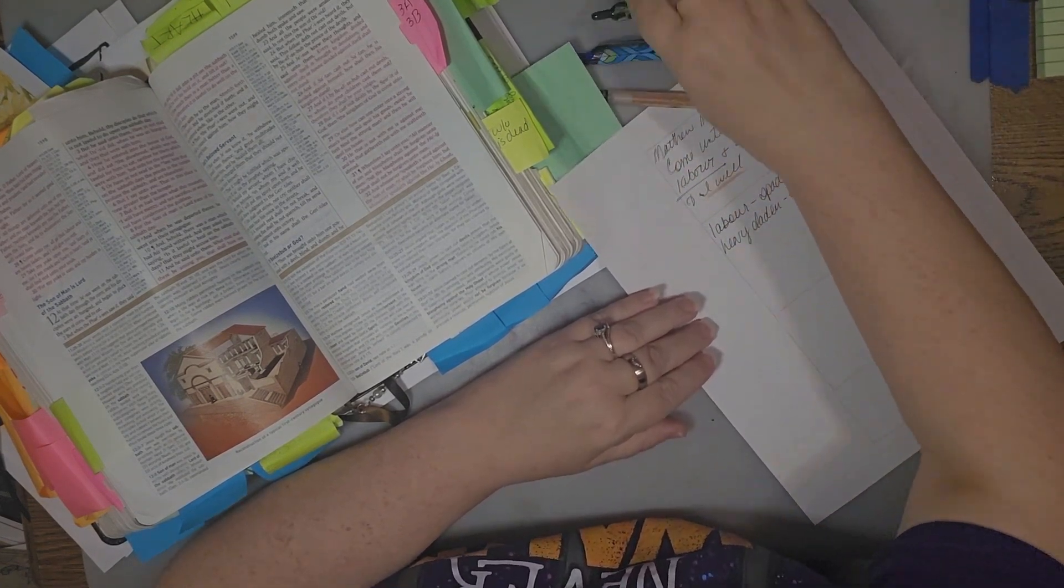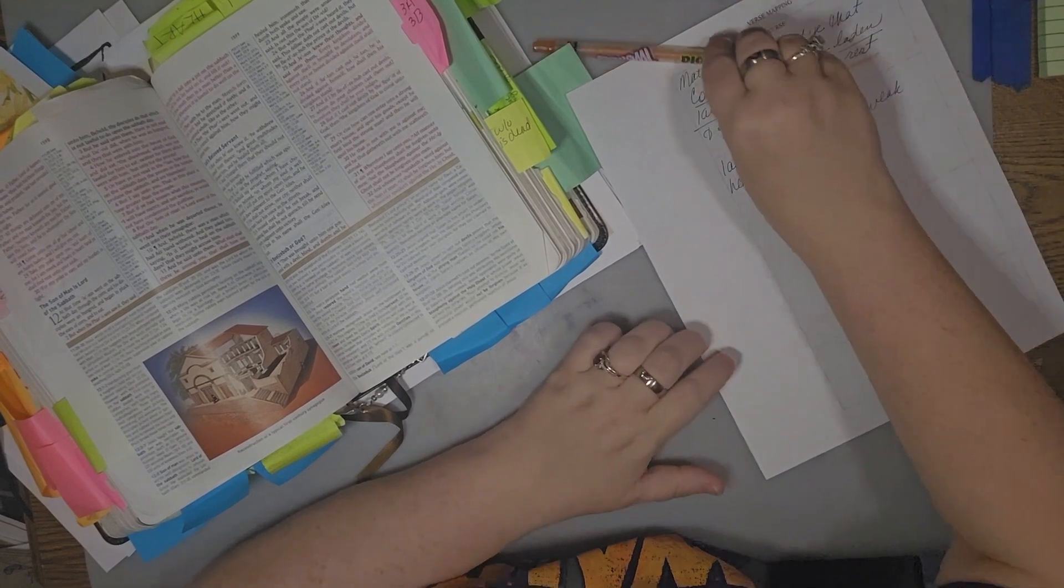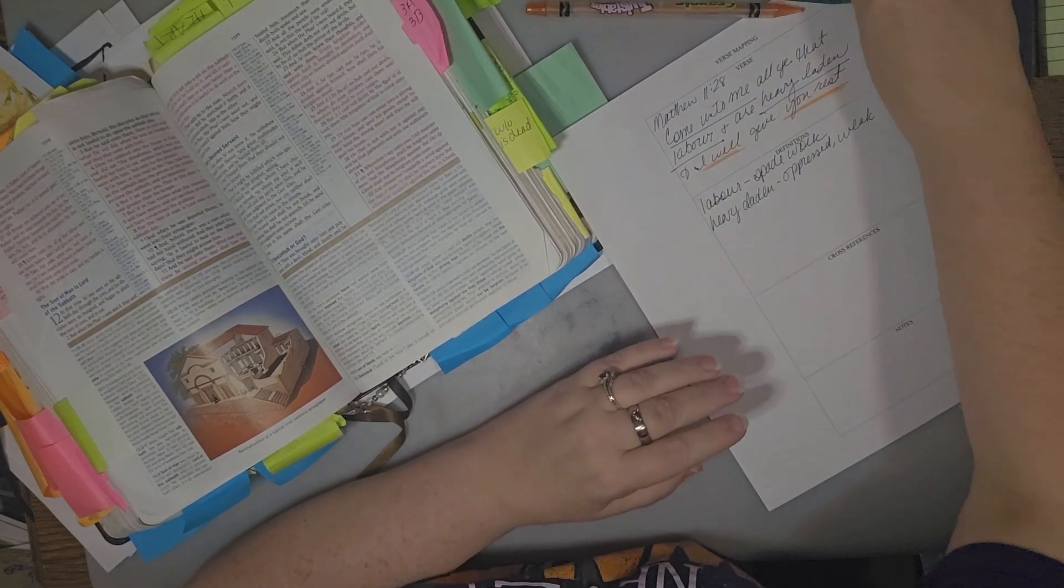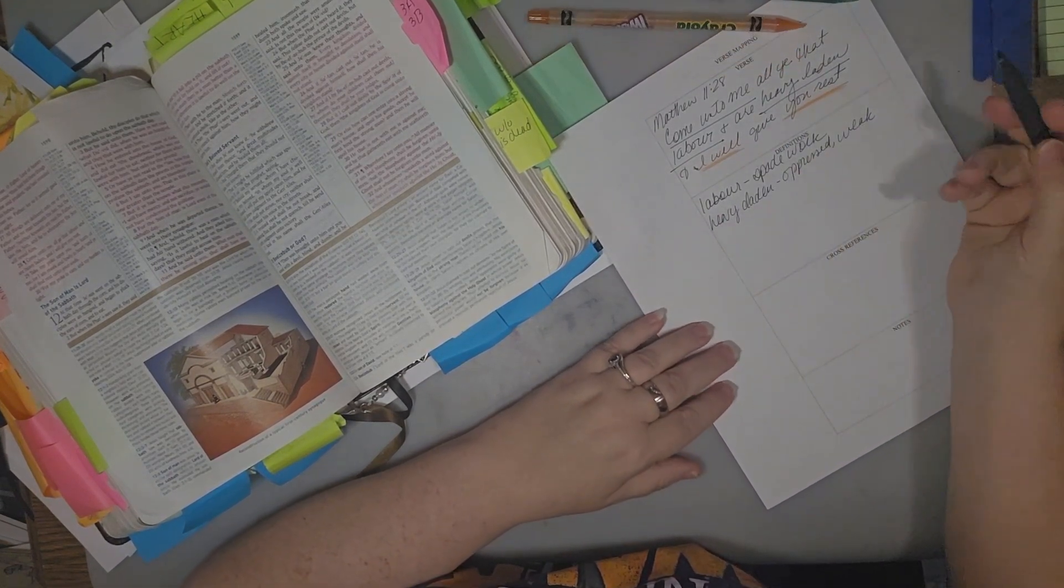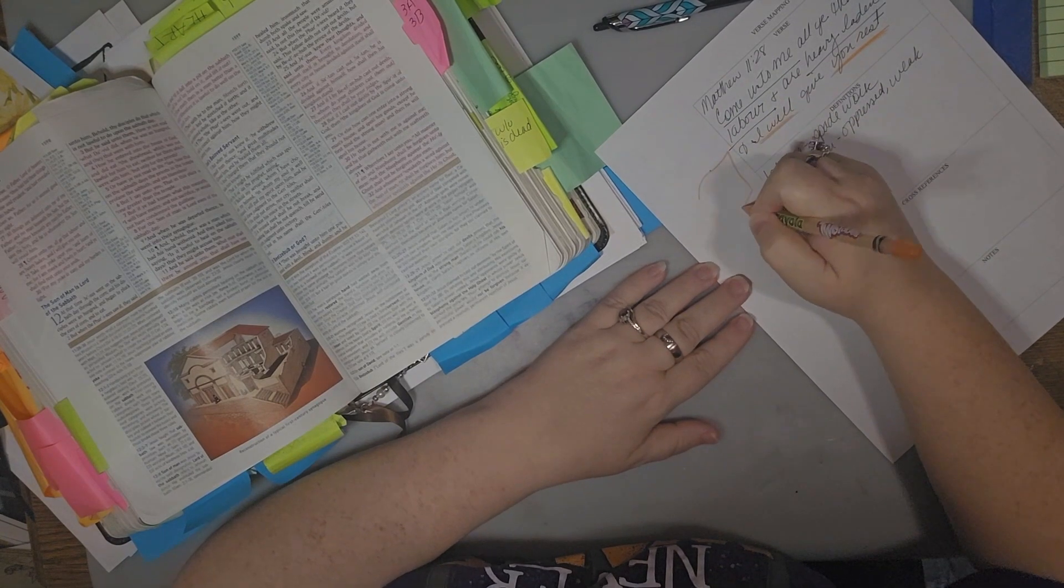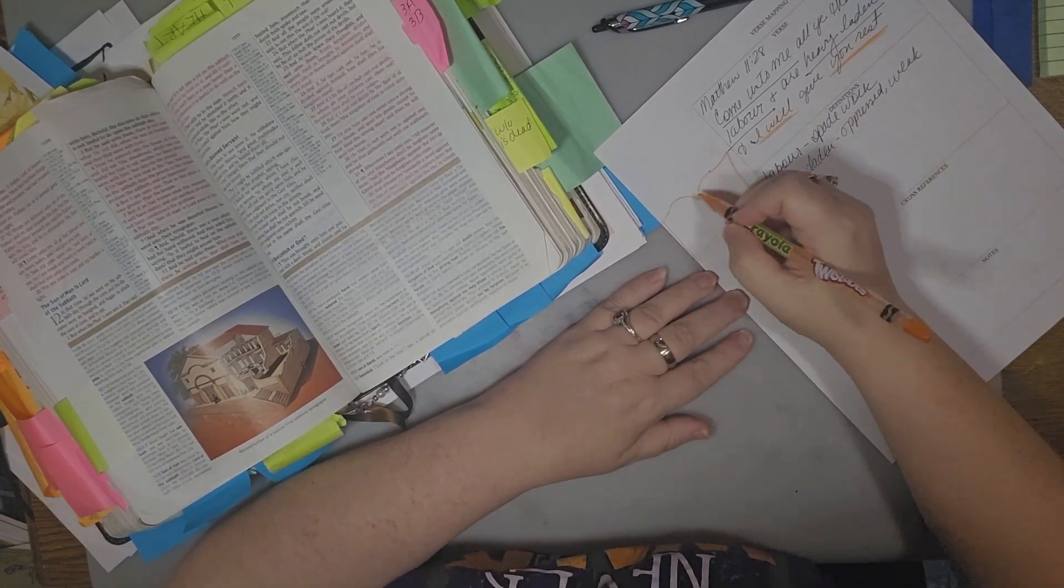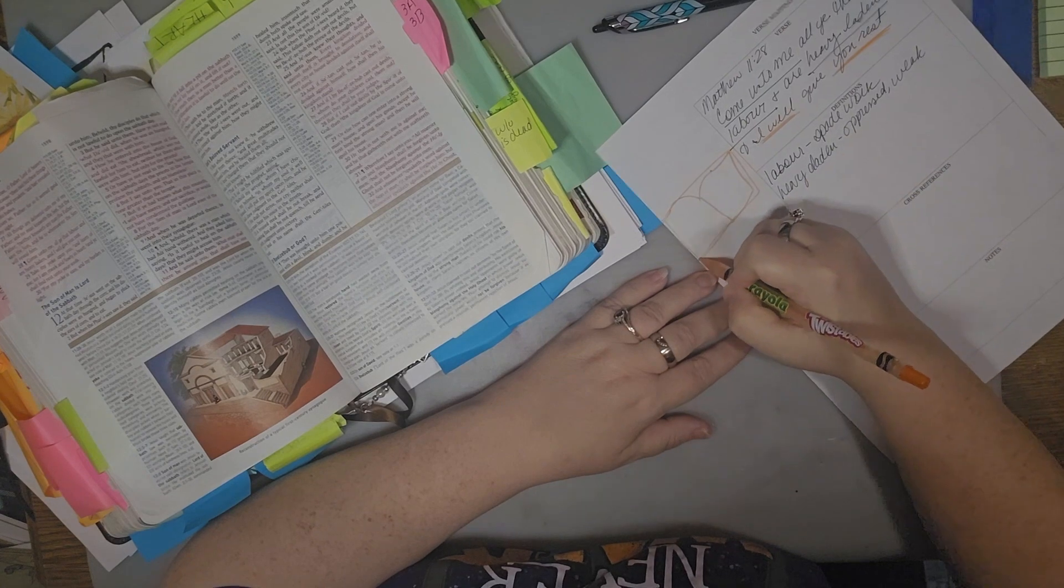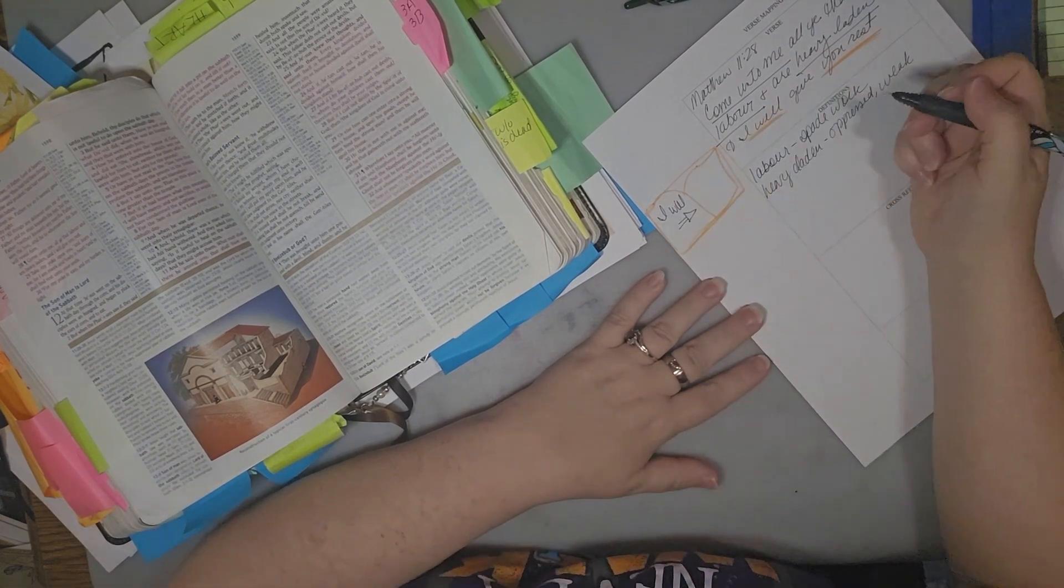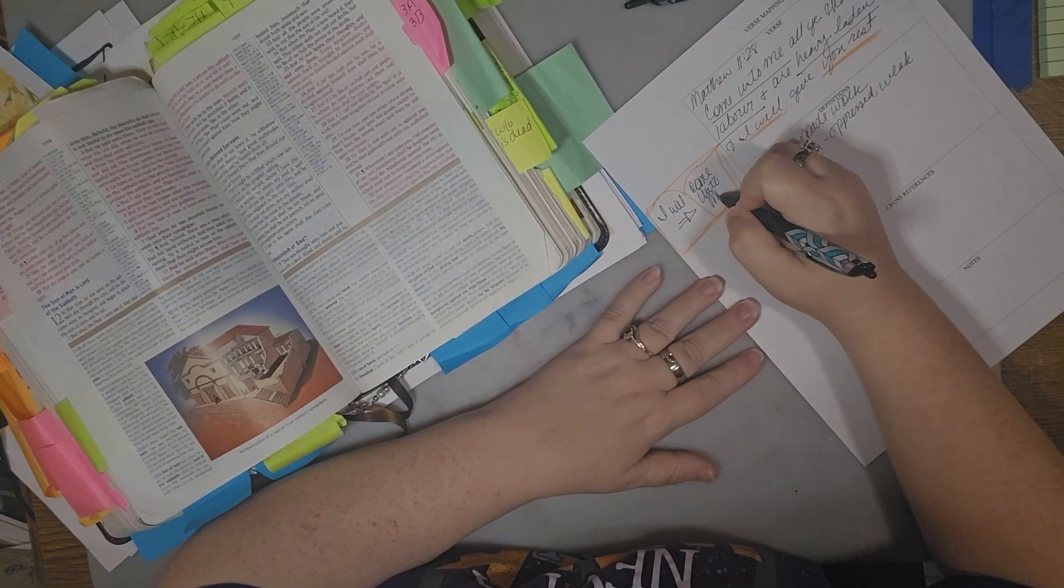I will. What does he say he will? He'll give us rest. But we have to what? What's the first thing we gotta do? What he tells us to do? Come unto me. That was sort of like a commandment, wasn't it? So I'm gonna do that. Let's do it in green. Come unto me. That's a commandment. He said, Come unto me, and I will give you rest. We gotta remember that.